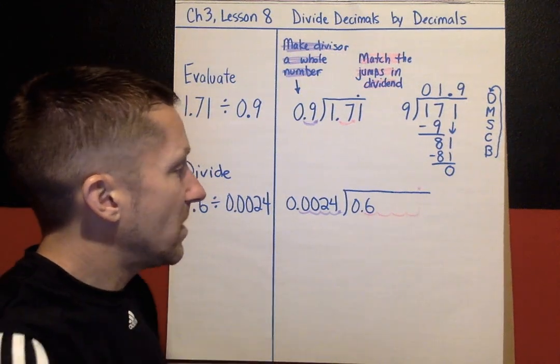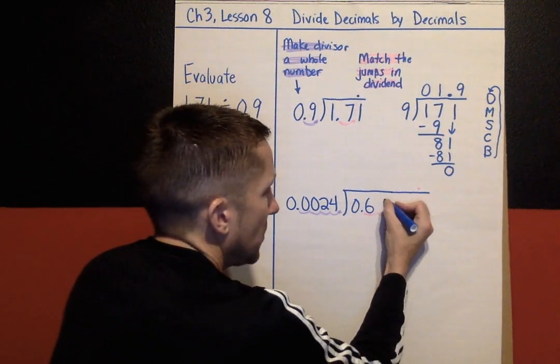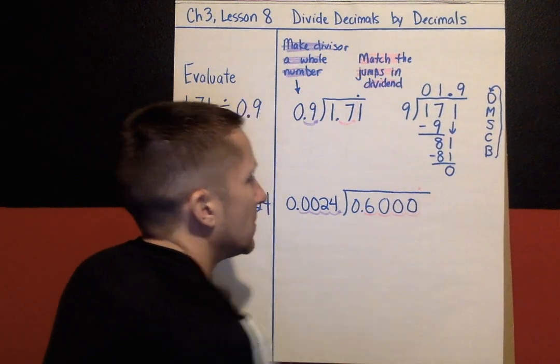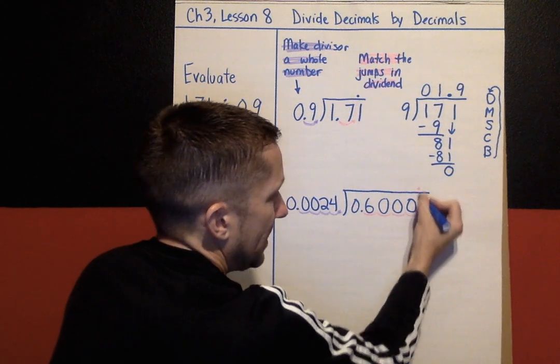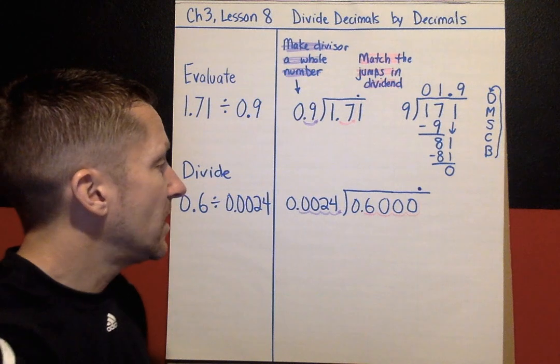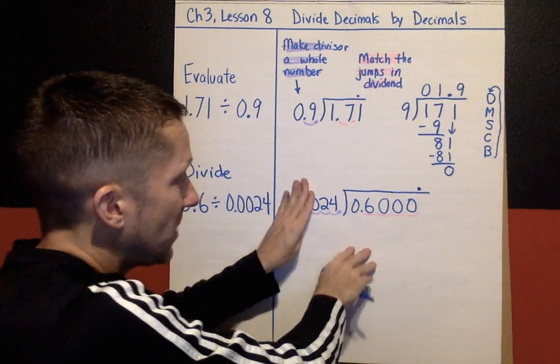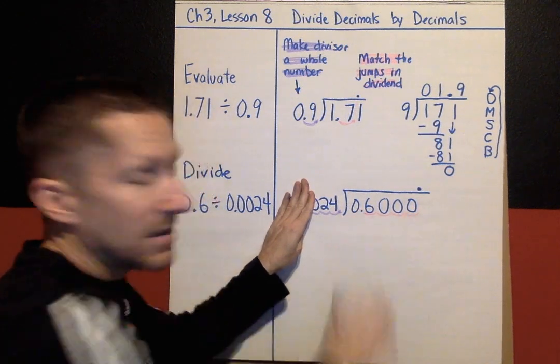1, 2, 3, 4. If you have empty jumps, I think most of you know what to do with those, but you're going to fill those in with 0s. And my decimal point, 4 jumps to the right, and then straight up. That's where my decimal point belongs. Now I can pretend like this is a 24. I'm ignoring all the decimal points, and I'm going to divide that into 6,000.